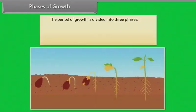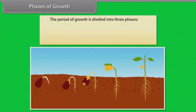Phases of growth: The period of growth is divided into three phases — meristematic, elongation and maturation.